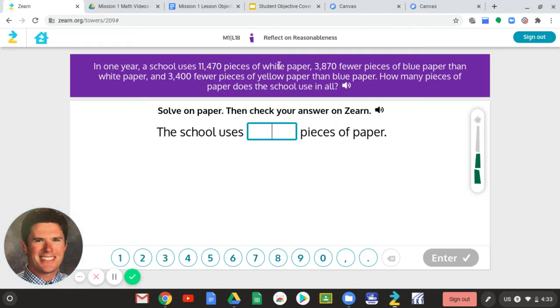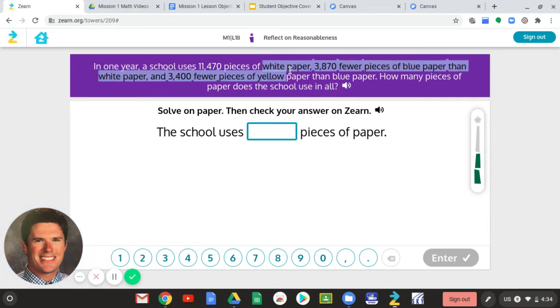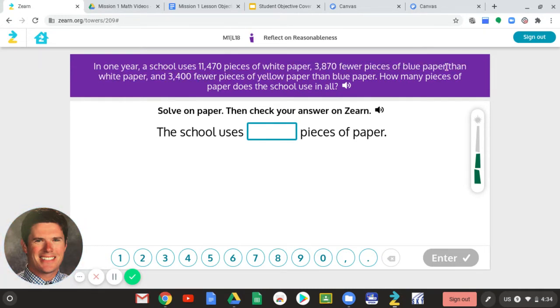So, what are we really dealing with? We are dealing with different colors of paper. We have white paper, we have blue paper, and we have yellow paper. And we are being asked, how many pieces of paper does the school have in all? So, we know we're just going to have to do several different equations to get to that final step. It's a multi-step, meaning it's not just one equation we're going to do to solve this. It's going to have to be multiple equations.